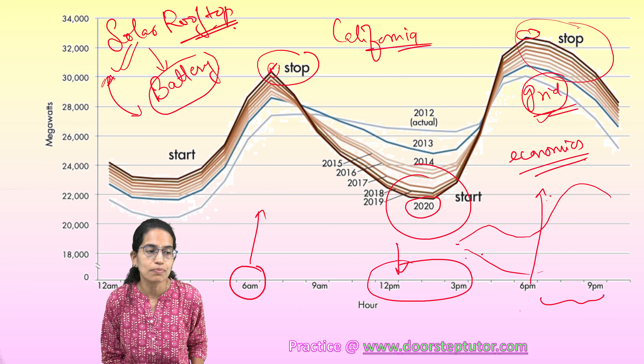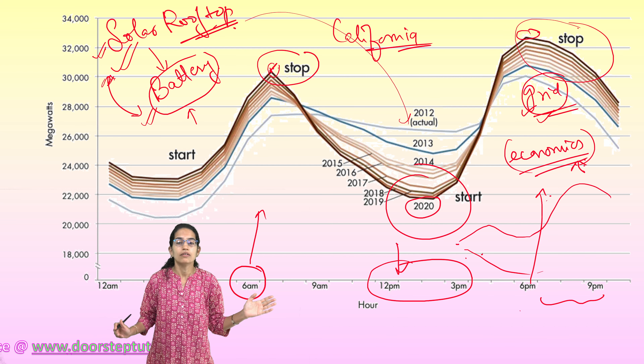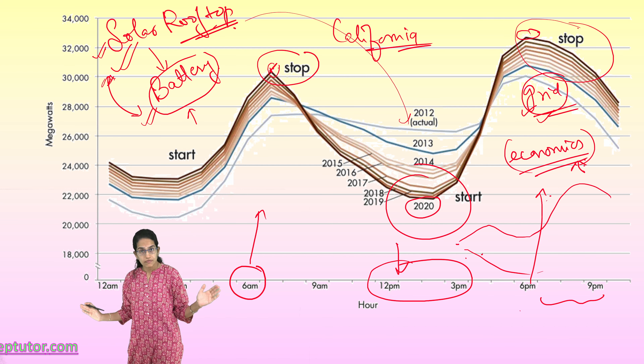If you want solar energy to be utilized during off-peak hours — when the sun is not at its brightest — you need a battery. Without a battery, you must rely on the power grid. Economics play a crucial role here: if power grids don't have sufficient demand, their reduced revenue causes them to downgrade their systems. There are fewer grids, and people tend to depend less on solar energy since peak solar output is viable mainly during weekends, not weekdays.